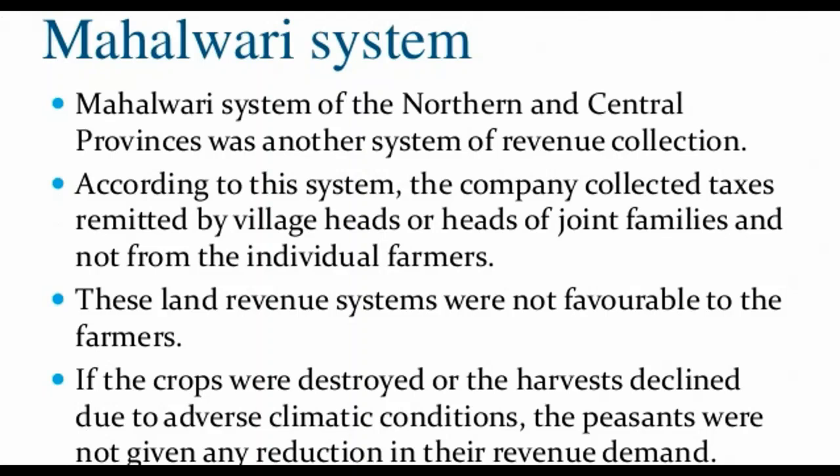The charge of collecting revenue and paying it to the company was given to the village headman rather than to the zamindar. Since the village was made the unit for paying revenue, and village was also known as 'Mahal', the system came to be known as the Mahalwari system. According to this system, the company collected taxes remitted by village heads or heads of joint families and not from individual farmers. These land revenue systems were not favorable to the farmers — if crops were destroyed or harvest declined due to adverse climatic conditions, peasants were not given any reduction in their revenue.